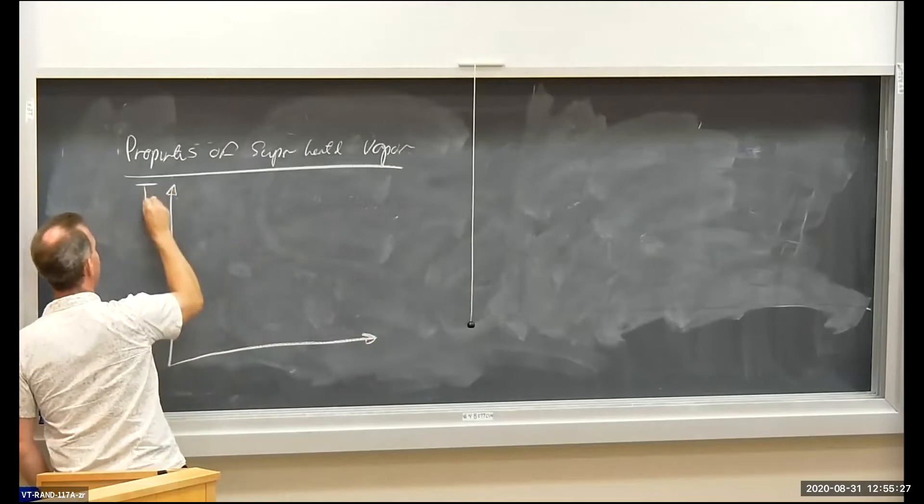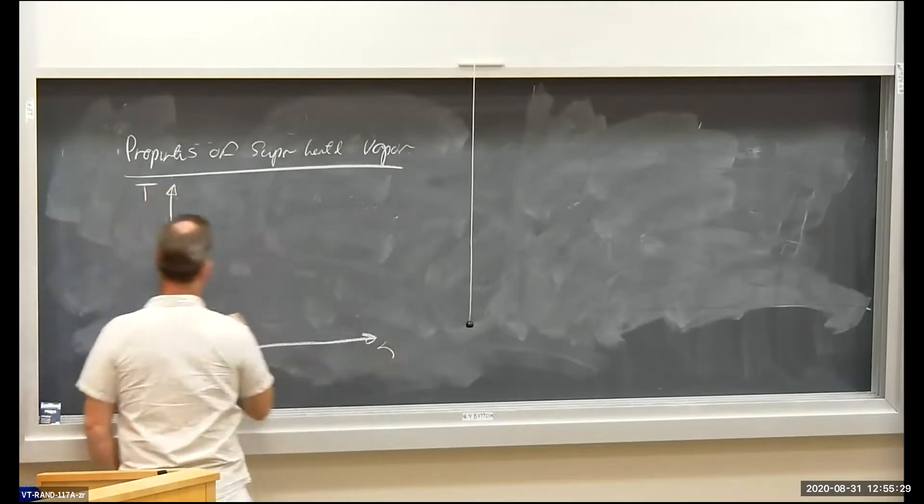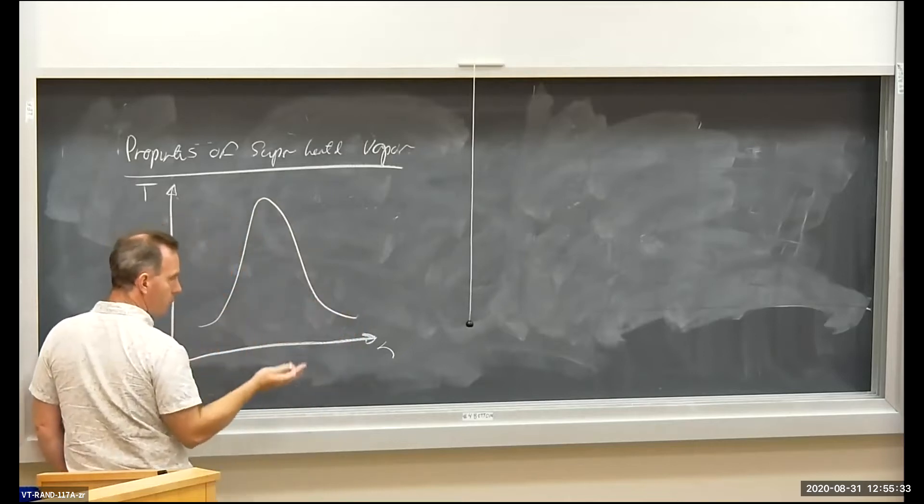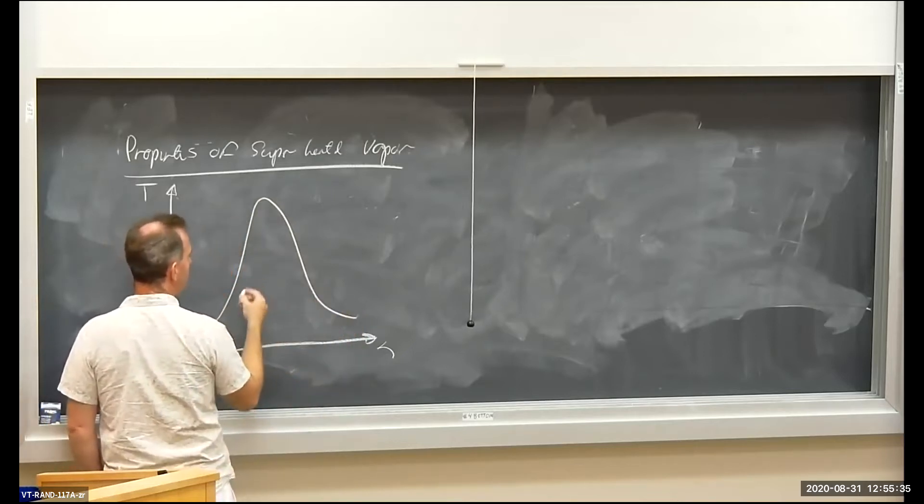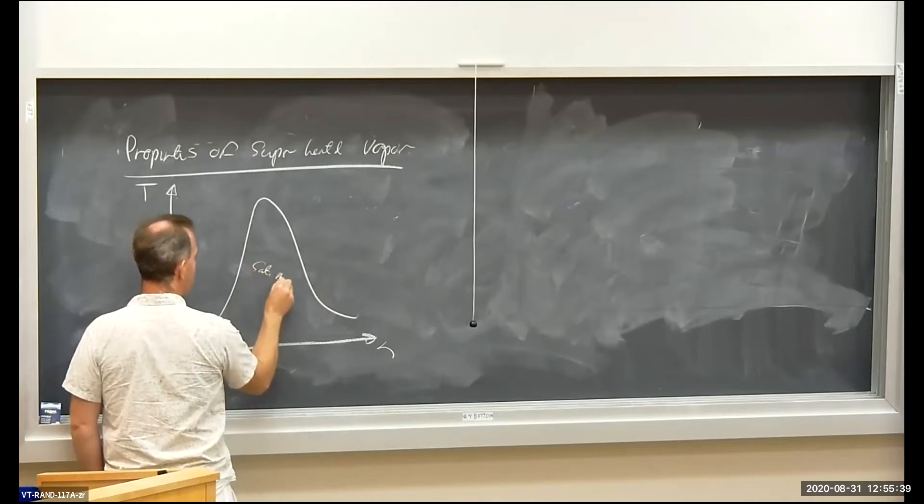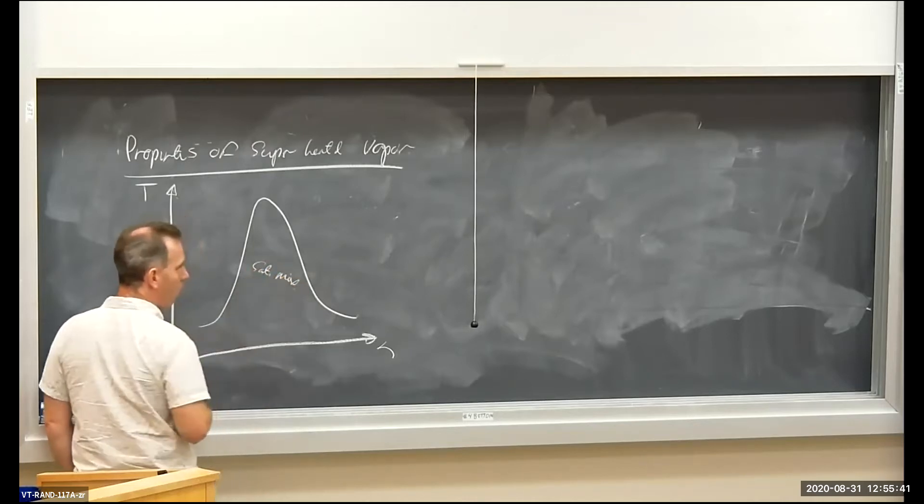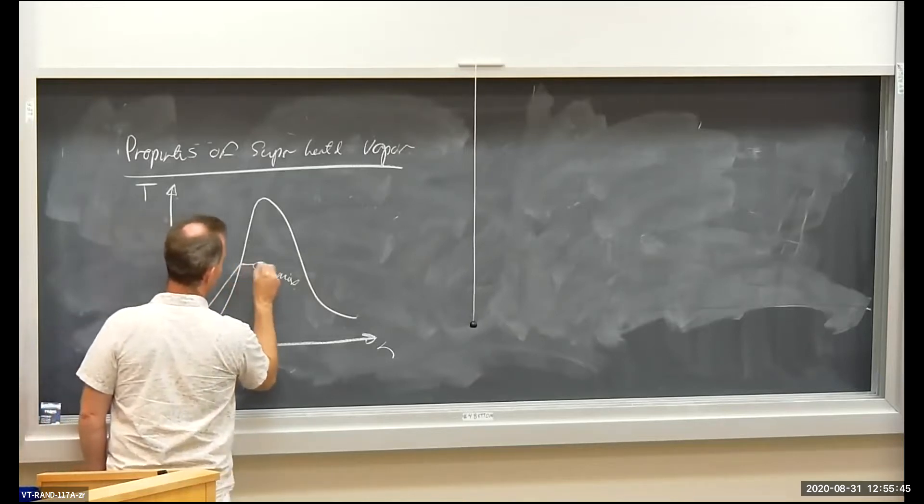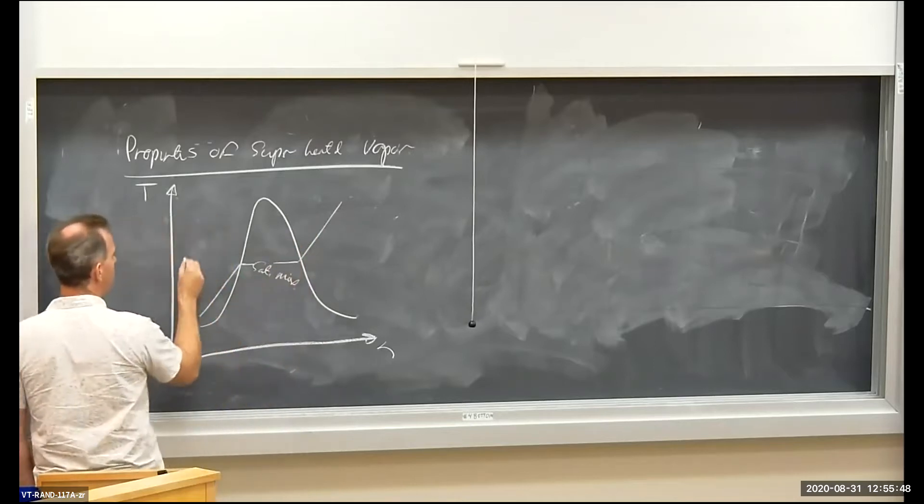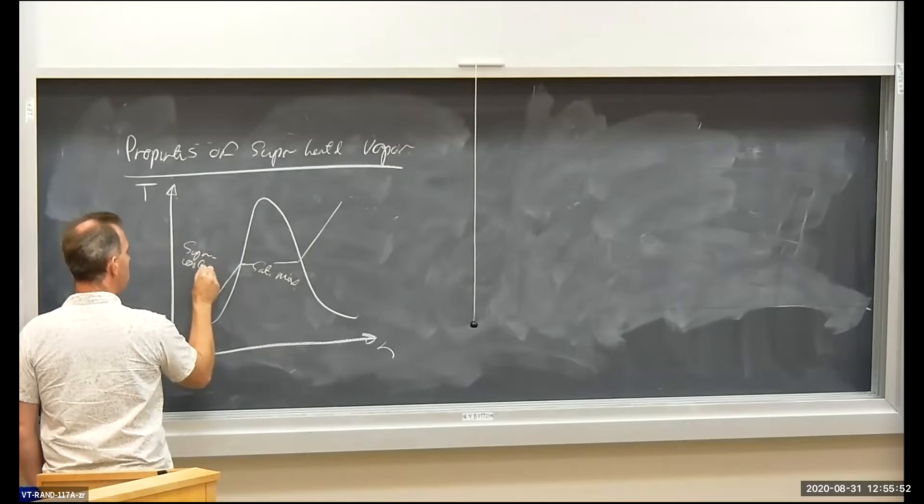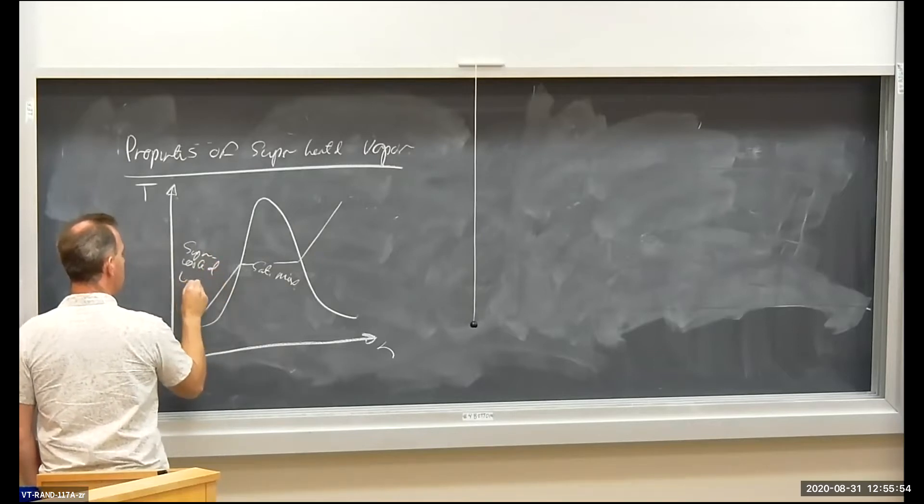Let's put up the TV plot. So let's recall here, we used quality to get properties for saturated mixtures. So inside, we have saturated mix where quality is important. Put in an isobar here. Then over here, we have super-